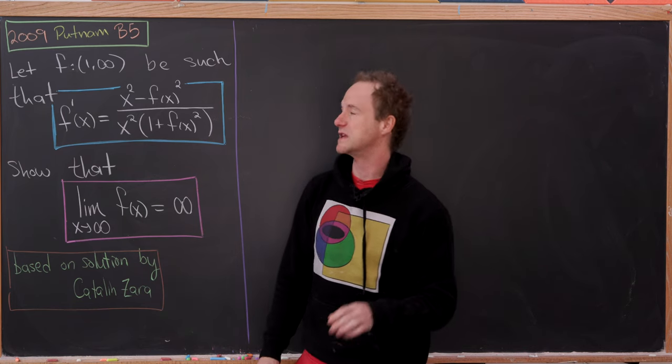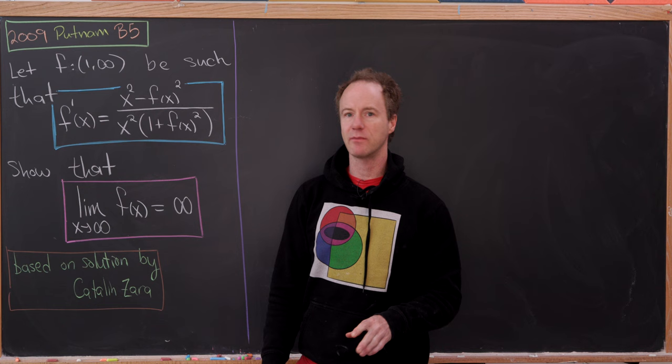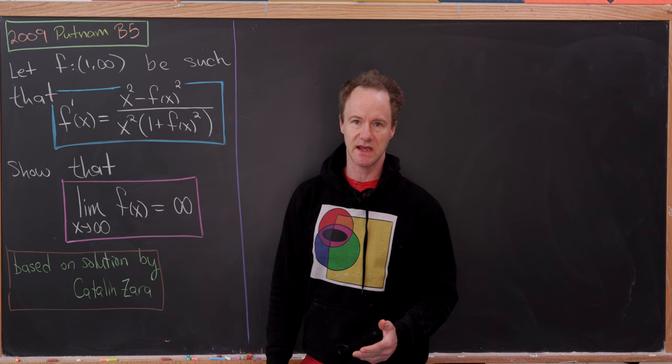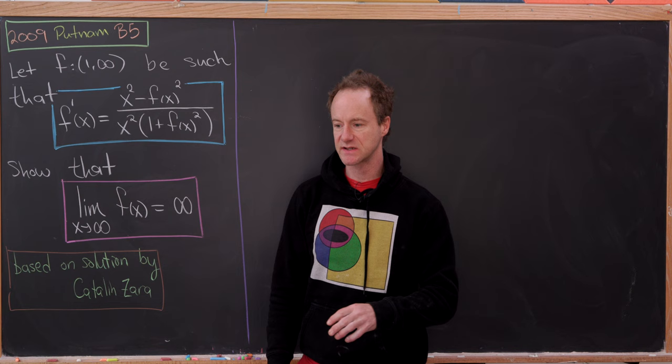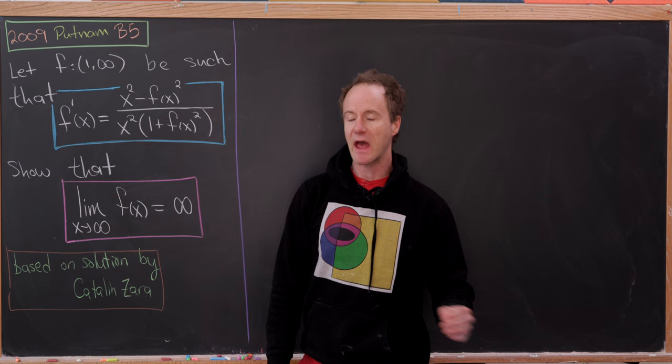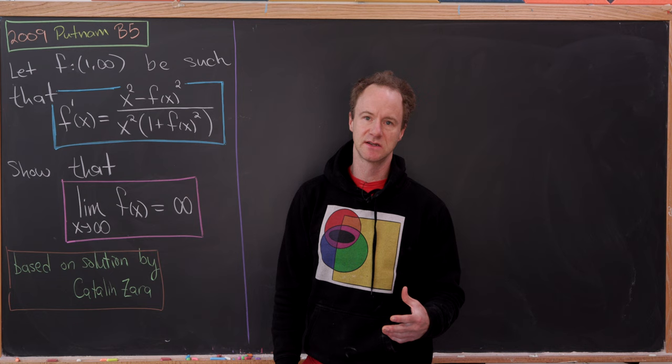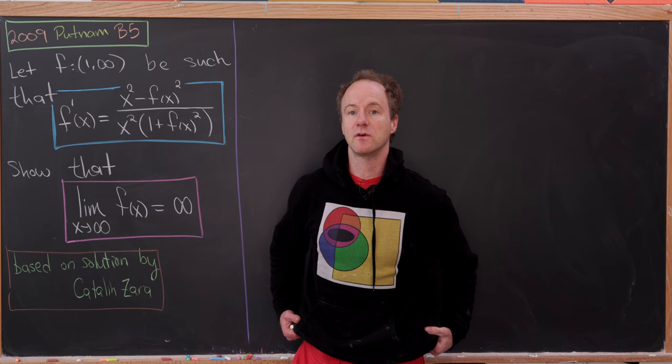Today we've got a nice problem from the 2009 Putnam exam — problem B5. The problems on the exam, A1 through A6 in the morning session and B1 through B6, are generally ordered in order of difficulty. So A1 and B1 are the easiest, A2 and B2 are next easiest, and that means B5 should be one of the more difficult problems on the exam.